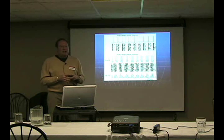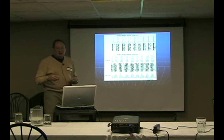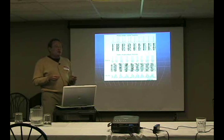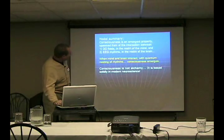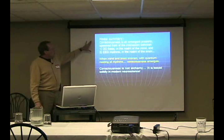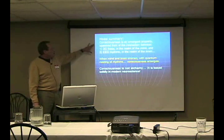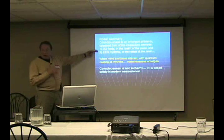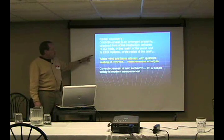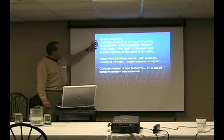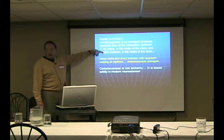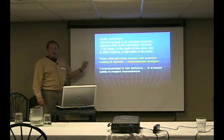If your theta is about 6 Hz and your gamma is about 40 Hz, the digit span won't be as good as someone whose gamma is more like 80 Hz — a tremendous difference in that relationship. In this model, consciousness is an emergent property spawned from the interaction between DC field potentials — the realm of mind — and EEG rhythms — the realm of brain. When mind and brain interact with quantum nesting of rhythms, consciousness emerges from glial and neural systems.